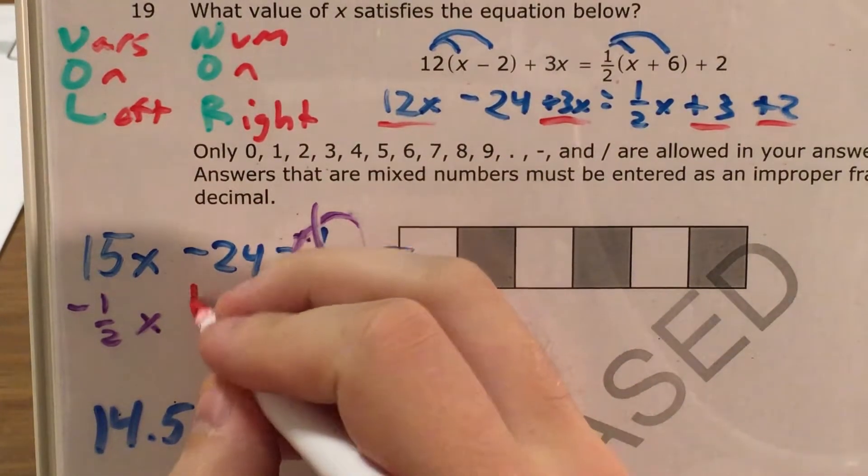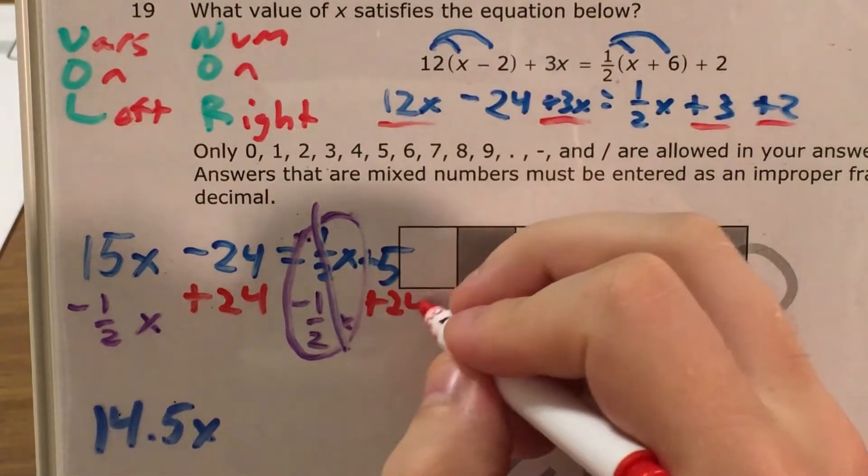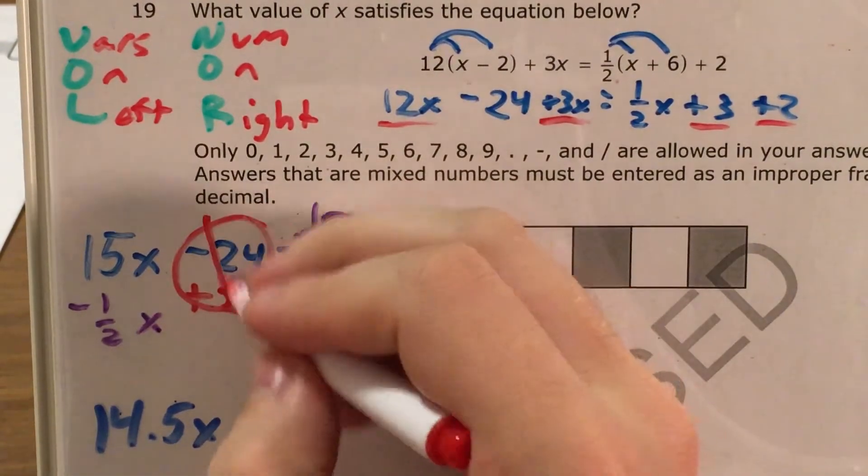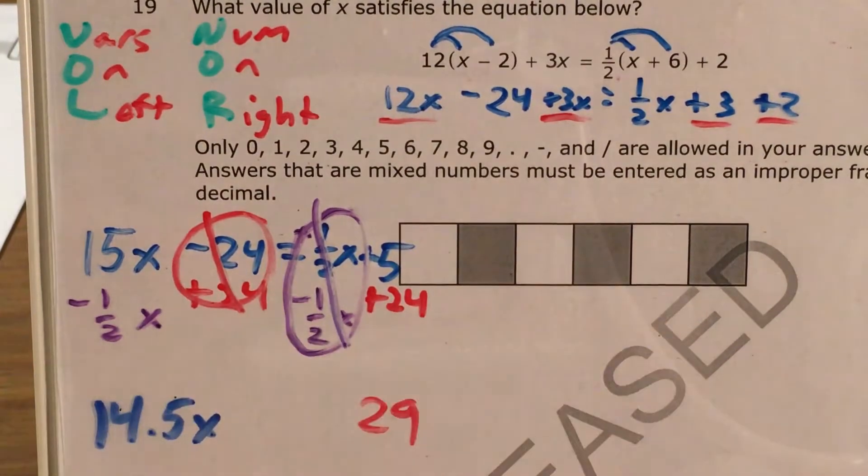Now for my right side I want all my numbers on my right side so I see minus 24 on the left and I think that's not good I want to get rid of that. So I plus 24 and minus 24 and plus 24 cancel and then plus 5 and plus 24 I add together to get 29.